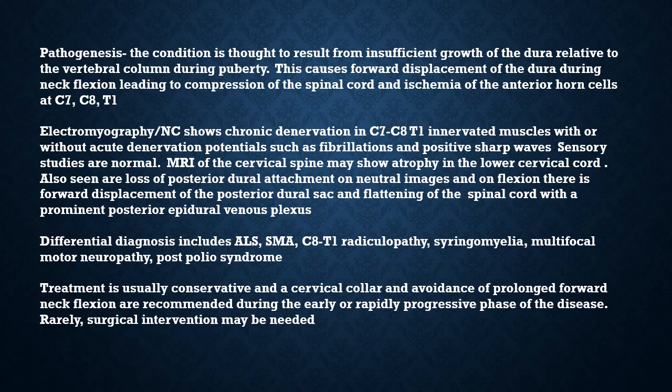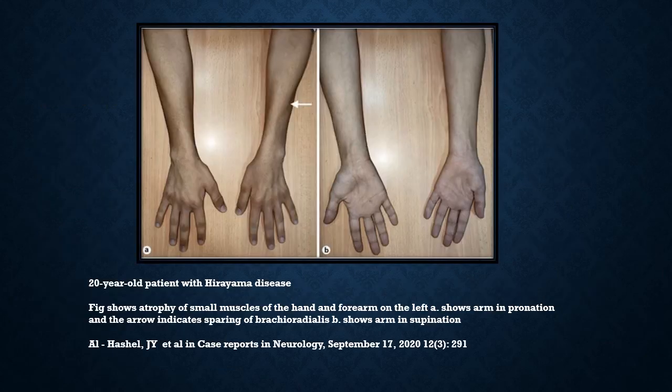Differential diagnosis includes ALS, spinal muscular atrophy, C8-T1 radiculopathy, syringomyelia, multifocal motor neuropathy, and post-polio syndrome. Treatment is usually conservative; a cervical collar and avoidance of prolonged forward neck flexion are recommended during the early or rapidly progressive phase of the disease. Rarely, surgical intervention may be needed.